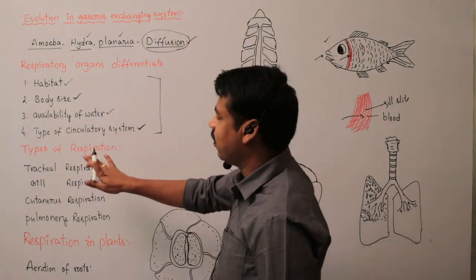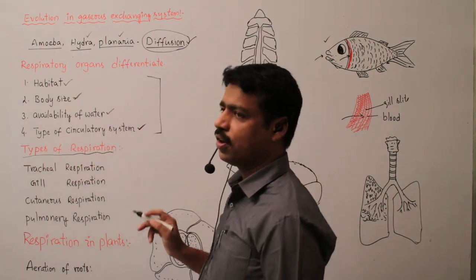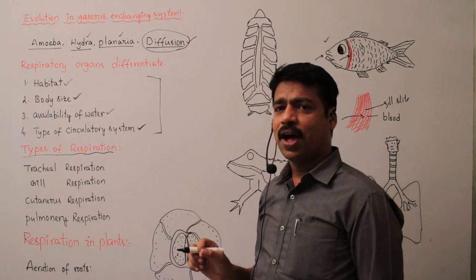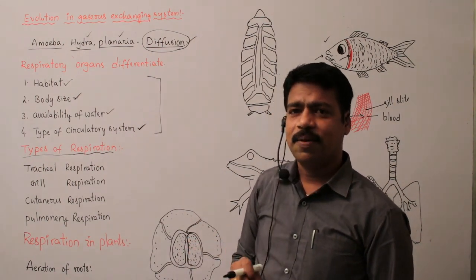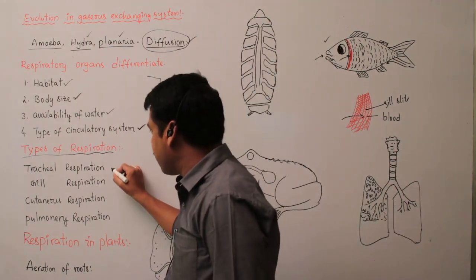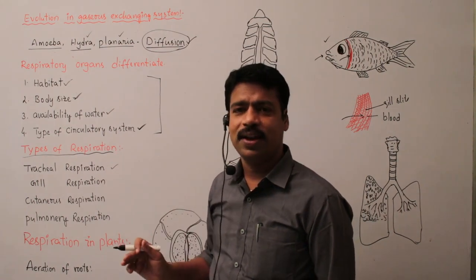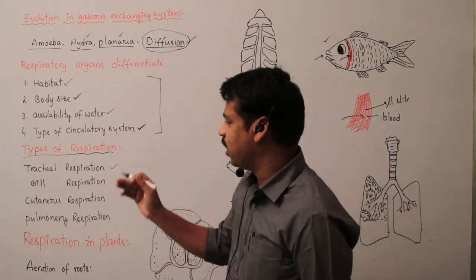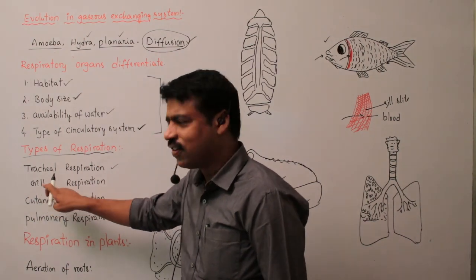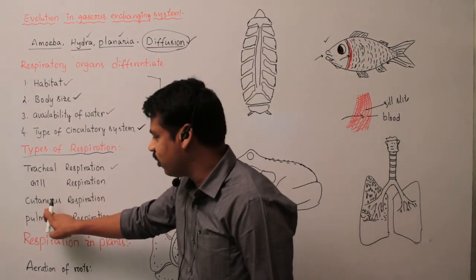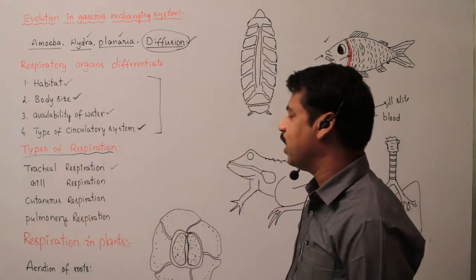Let us discuss the types of respiration. Based upon the respiratory system, we discuss four types of respiration. First is tracheal respiration. Second is gill respiration. Third is cutaneous respiration. And fourth is pulmonary respiration.